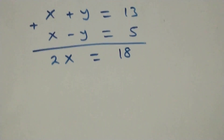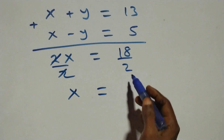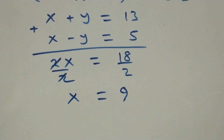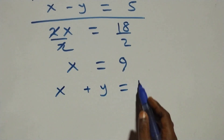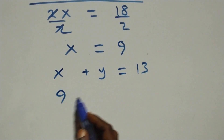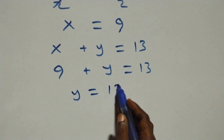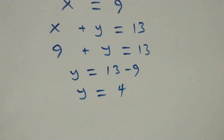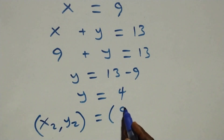We have 2x = 18. Dividing both sides by 2, x = 9. Then using x + y = 13: 9 + y = 13, so y = 13 minus 9 = 4. The second solution (x₂, y₂) = (9, 4).